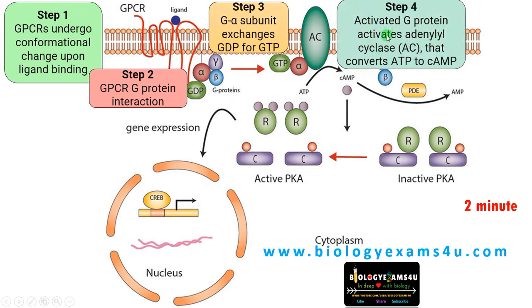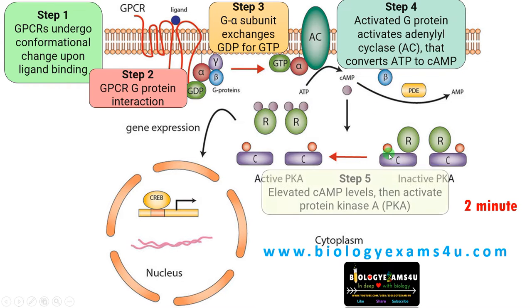Step 4: This activated G protein then activates effectors like adenylyl cyclase, an enzyme that converts ATP to cAMP. As we know, cAMP is a second messenger.